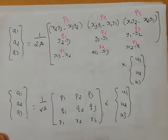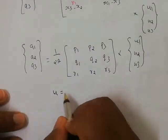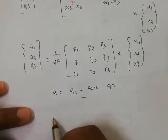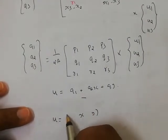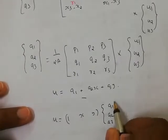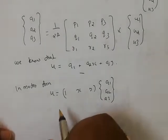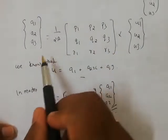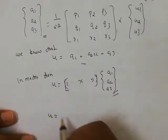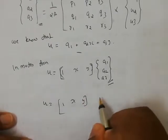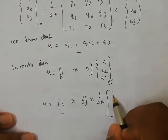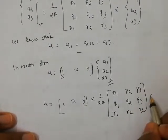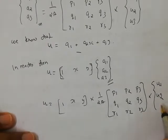We know that U = A1 + A2*x + A3*y. Writing this in matrix form, U equals the row matrix [1, x, y] multiplied by [A1, A2, A3]. Substituting the expression for A1, A2, A3, we get U = [1, x, y] times (1/2A) times the matrix [P1, P2, P3; Q1, Q2, Q3; R1, R2, R3] times [U1, U2, U3].